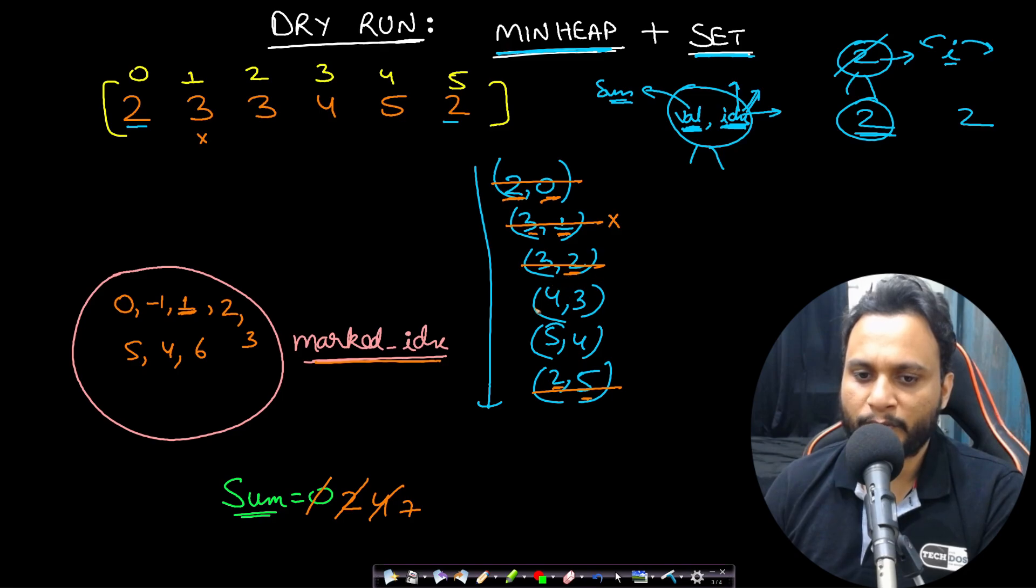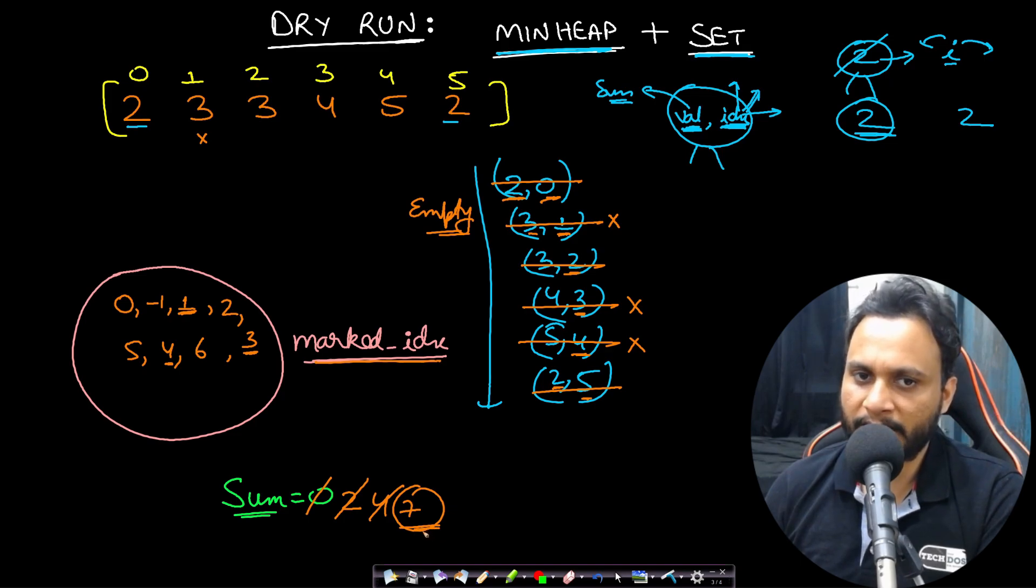Now the next item to be picked out is 4, 3. Now you check out this index 3. It is already present in the marked index. So it cannot be included. Now you check out this 5, 4. Check out the index 4. Index 4 is already marked. So it will not be included. And the heap is empty. So when the heap is empty, we have tried all the items one by one. And whatever is the sum value will be our answer which is 7 in this case.